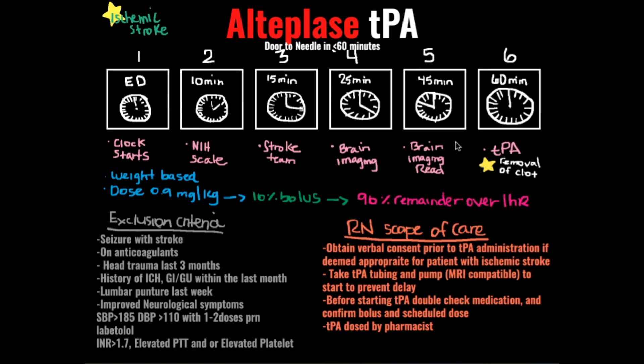Step five is within 45 minutes: by then you're back with the patient in the ED and the imaging should have been read. Step six is your 60-minute mark: if the patient is indeed a candidate for TPA — the clot buster — it should have been started. The goal is recanalization via endovascular therapy.